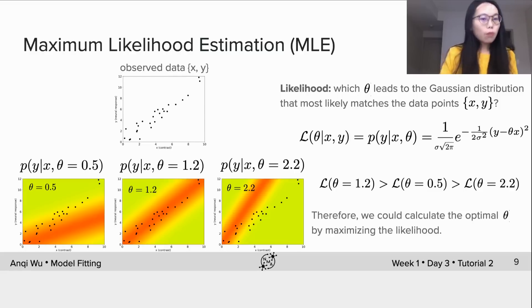Okay, therefore, we could calculate the optimal theta by maximizing the likelihood.